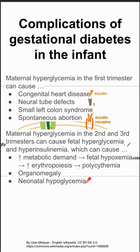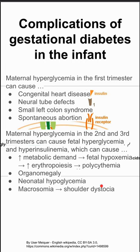This is because if baby has a lot of glucose and a lot of insulin before birth, after birth they're going to lose that high supply of glucose, and they'll still have that high insulin, so that can cause a hypoglycemic picture in the neonatal period.